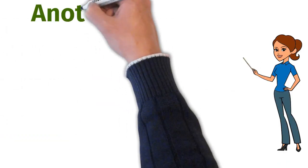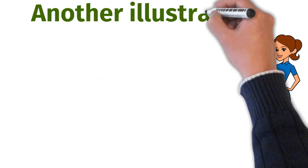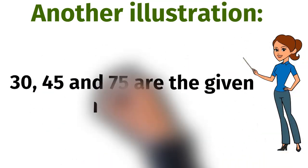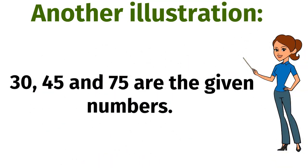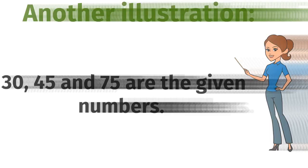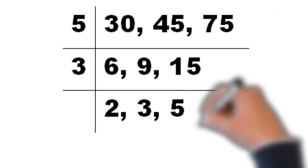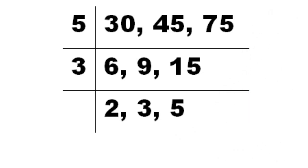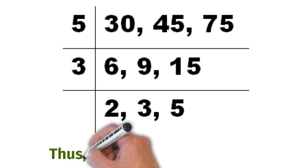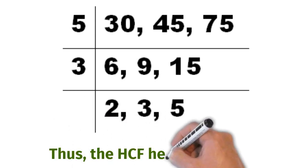We have another example. 30, 45 and 75 are the given numbers. After dividing them by 5 and then 3, there remains no common prime factor. Thus, the HCF here is 5×3, that is 15.